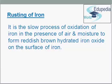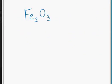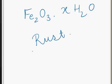Rusting of iron. Rusting is a slow process of oxidation of iron in the presence of air and moisture to form reddish brown hydrated iron oxide on the surface of iron. The chemical composition of rust is Fe2O3·xH2O.